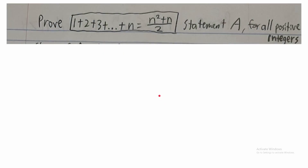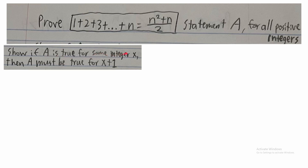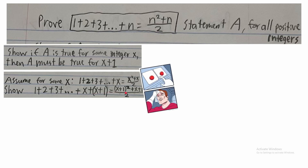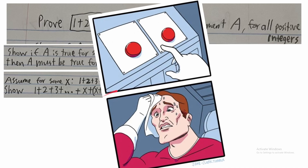So let's prove that 1 plus 2 plus 3 all the way up to plus n is equal to n squared plus n over 2. This is the statement we're gonna call statement A — prove that it is true for all positive integers. First we want to show that if A is true for some integer, then it must be true for that integer plus 1. We're gonna assume that it is true for some x, and now show that it is true for the next value of x.